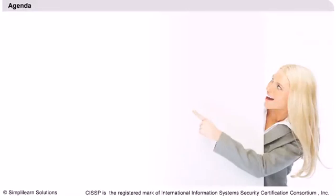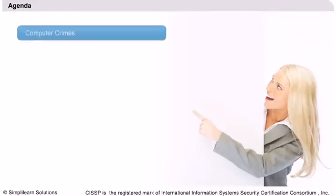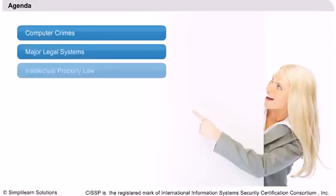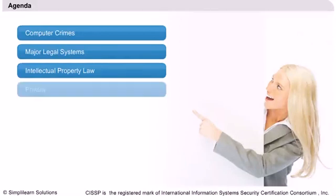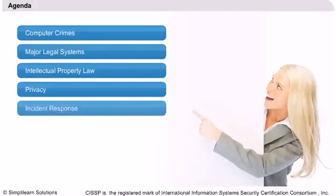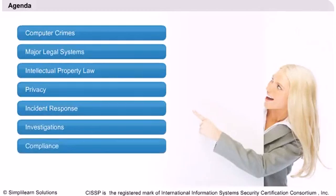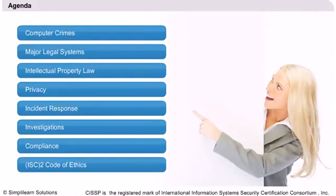The agenda for this lesson is as follows. We begin with the overview of computer crimes. Major legal systems will be discussed next. This will be followed by intellectual property law, privacy, incident response, investigations and compliance. Finally, we will discuss the ISC-2 Code of Ethics.